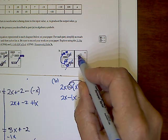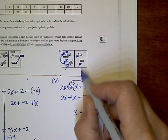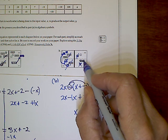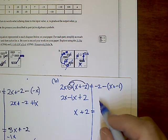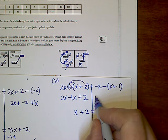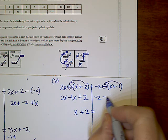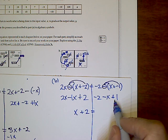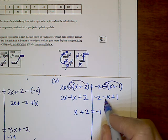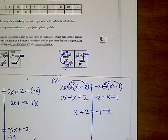On the right side, I have a negative one tile top and bottom, so those cancel. Then I take the positive x tile from the bottom and flip it to the top, making it a negative x. Algebraically: distributing the minus gives negative two minus x, and minus a negative one becomes plus one. Combining: negative two plus one is negative one, leaving negative x minus one, or negative one minus x.